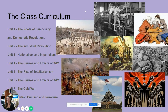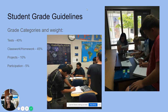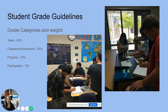Next semester we'll cover the rise of totalitarian states, the causes and effects of World War II, the Cold War, and then nationalism and terrorism. As for grades, tests are worth 40%, classwork and homework is 45%, projects are 10%, and participation is 5%. So make sure they're participating — I'm encouraging them to do so as well.